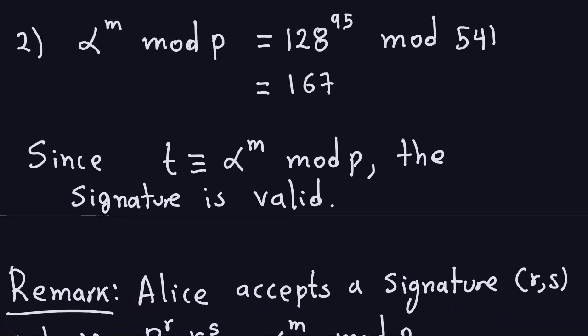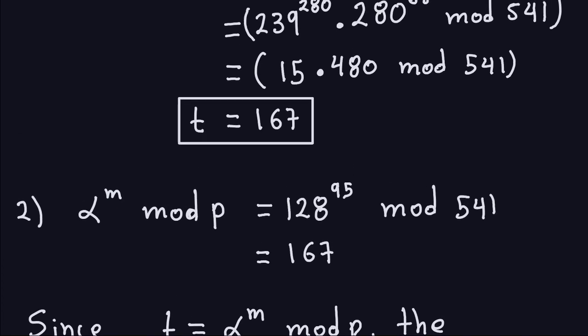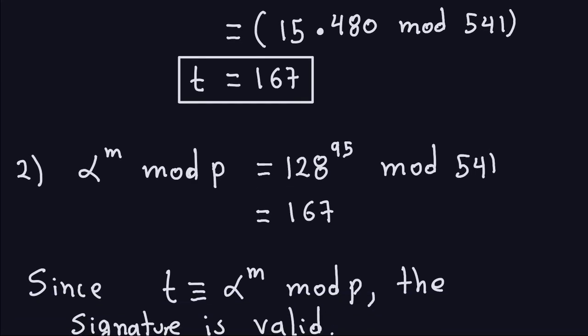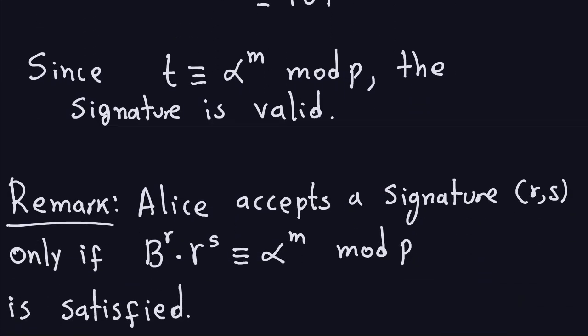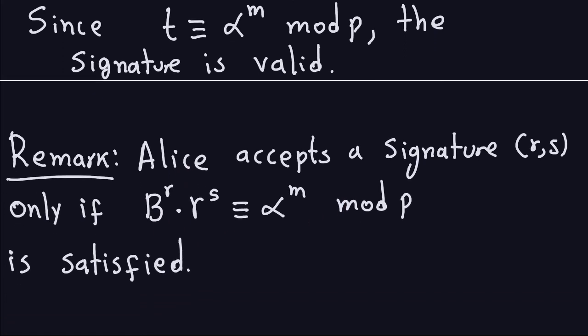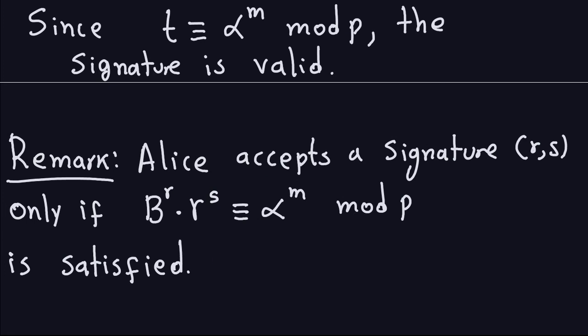This process in the algorithm, you go through this variable T. You don't actually have to create a new variable. The only thing you have to do is just compare B to the R times R to the S to Alpha to the M modulo P, and if they happen to be the same, that's valid signature. The only reason we do it in steps is to make it easier. But if you were to implement this in a program, you don't have to define a new variable T. If this is satisfied, then the signature is valid.